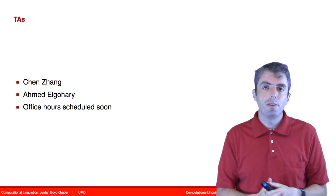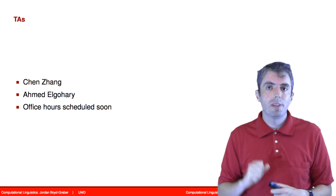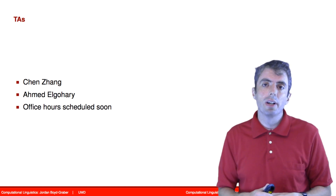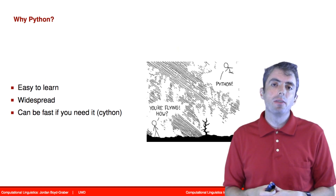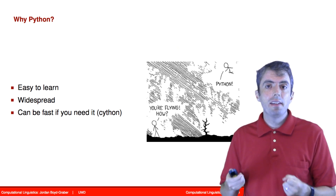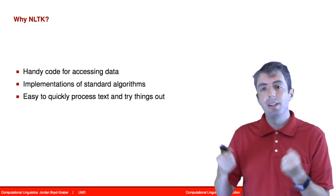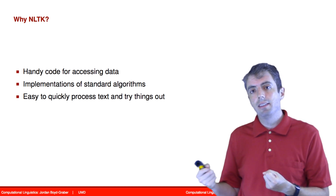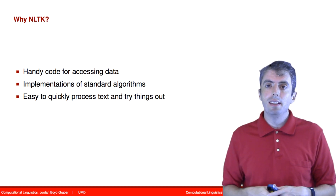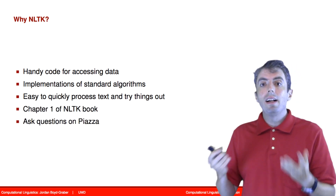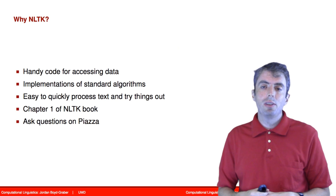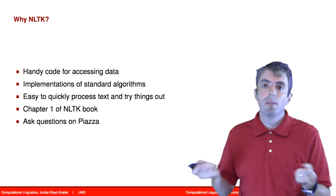We have two wonderful TAs for this course. They'll be introducing themselves in the first class and posting to Piazza soon to figure out when they will hold their office hours. We'll be using Python for this course — Python is a very easy language to learn if you haven't been exposed to it before. Another reason we're using Python is it has a great library called the Natural Language Toolkit that integrates a lot of datasets and resources very easily. This lets us very quickly get up to speed in computational linguistics. While I'll give the first chapter of the NLTK book as a reading assignment, don't hesitate to ask questions about NLTK on Piazza or elsewhere.